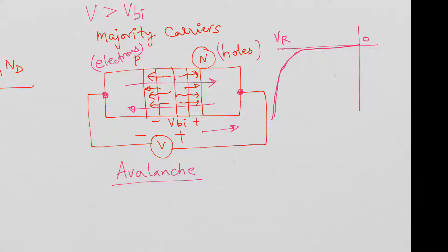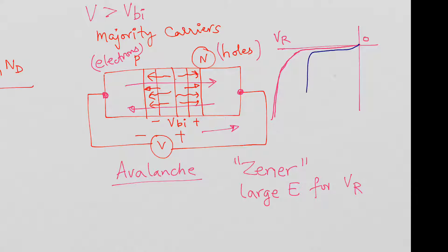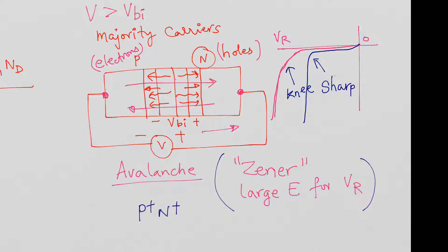In some diodes — what we call Zener diodes — the doping is designed so that a large electric field is created at a smaller reverse voltage. In that case, the current in reverse bias also stays small initially, but after a certain point there is a sudden, sharp increase in current — the Zener breakdown. Unlike the softer knee of avalanche breakdown, Zener breakdown is sharp. These are typically P plus N plus diodes, and the well-defined Zener breakdown voltage can be used as a voltage reference.